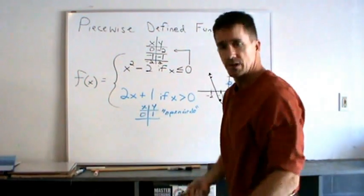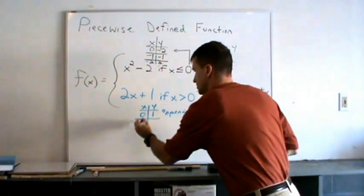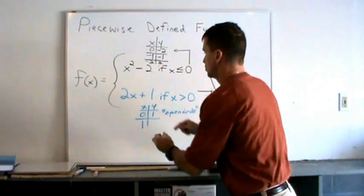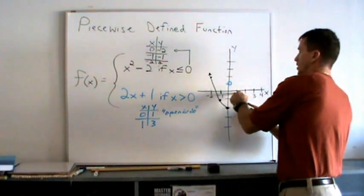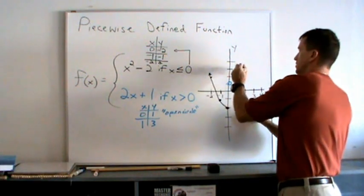We just need one more point. How about x equals 1? That's greater than 0. So substitute 1, 2 times 1 plus 1 is 3. Let's plot the point. Look at the xy coordinate, 1 comma 3, 1 here, 3 here.